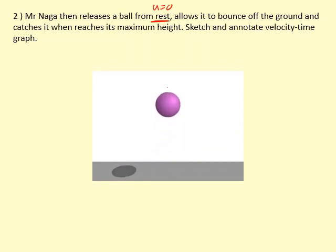So when we release it from rest, it starts with velocity u equals 0, and then it starts to speed up. And just before it hits the ground, it's traveling the fastest. And as soon as it hits the ground, its velocity changes direction. That's the only point when it's in contact with the ground, the only point when there's another force other than gravity.